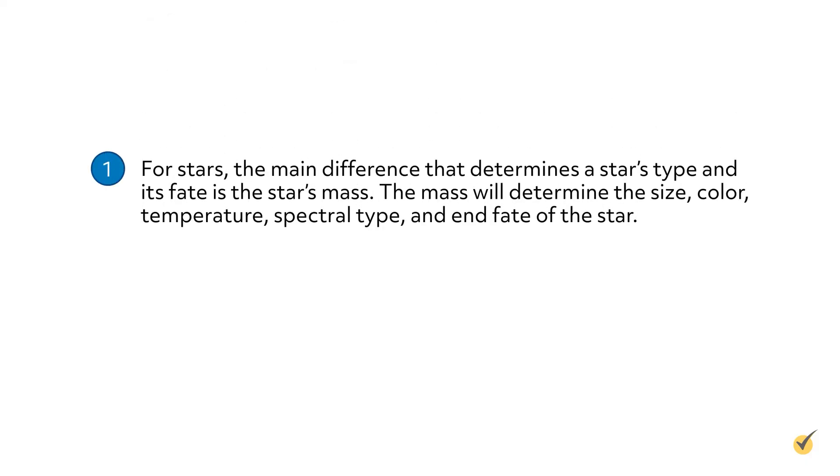The goal of giving names to different kinds of stars is that scientists can compare and contrast these categories. Therefore, it's the differences between the categories that are most important. For stars, the main difference that determines a star's type and its fate is the star's mass. The mass will determine the size, color, temperature, spectral type, and the end fate of the star.